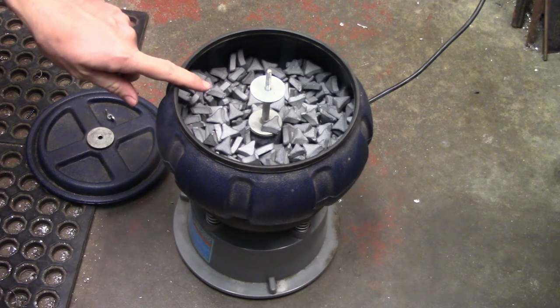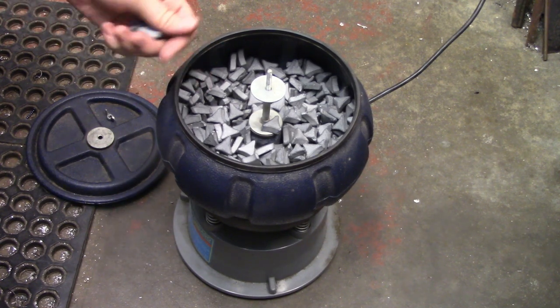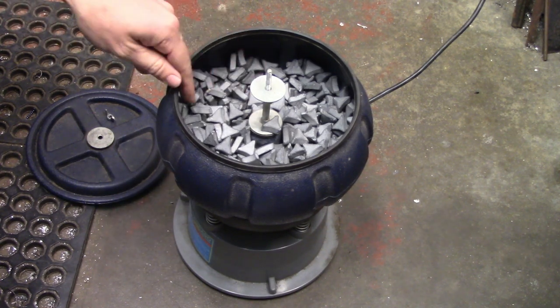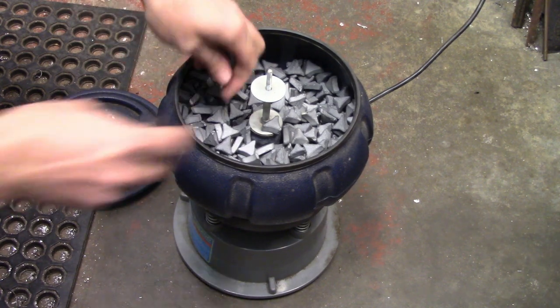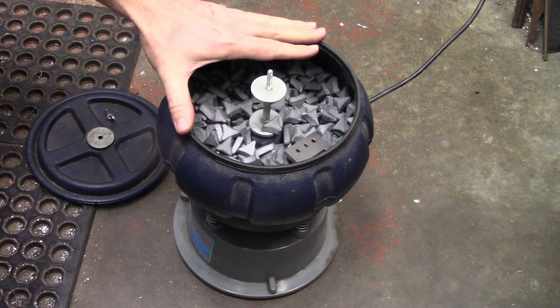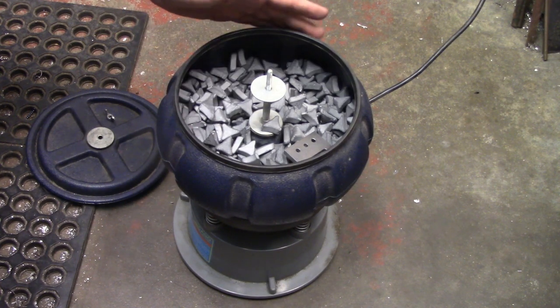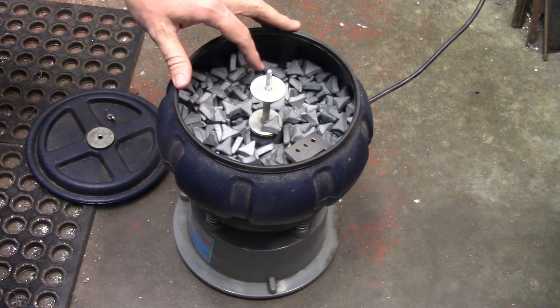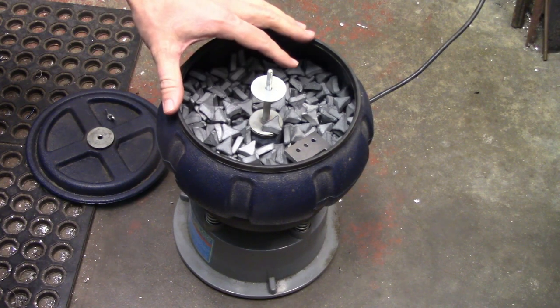Lastly, let's talk about vibratory tumblers. These use an abrasive medium that's held in a bowl or a drum that vibrates. The parts are thrown in and allowed to shake around for a little while until the edges are all polished off. This is a small one that's sold by Harbor Freight, but industrial units can be very large.